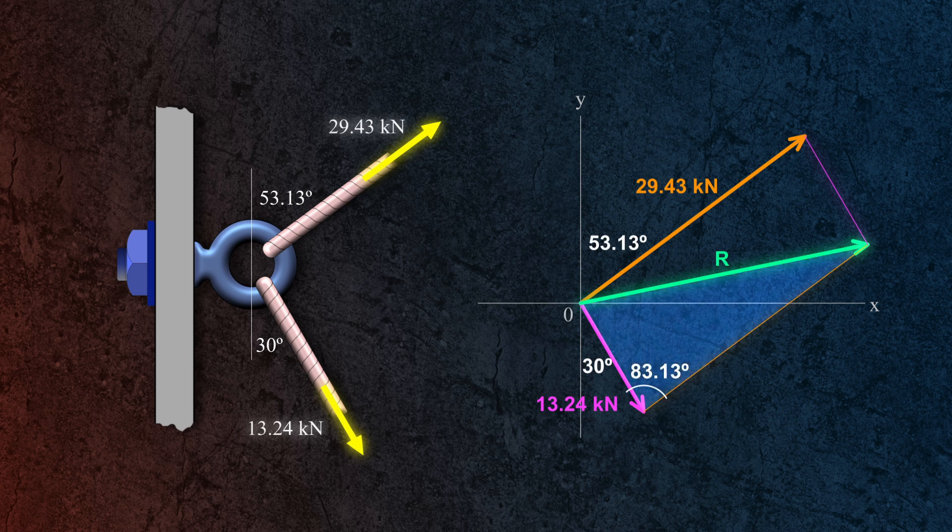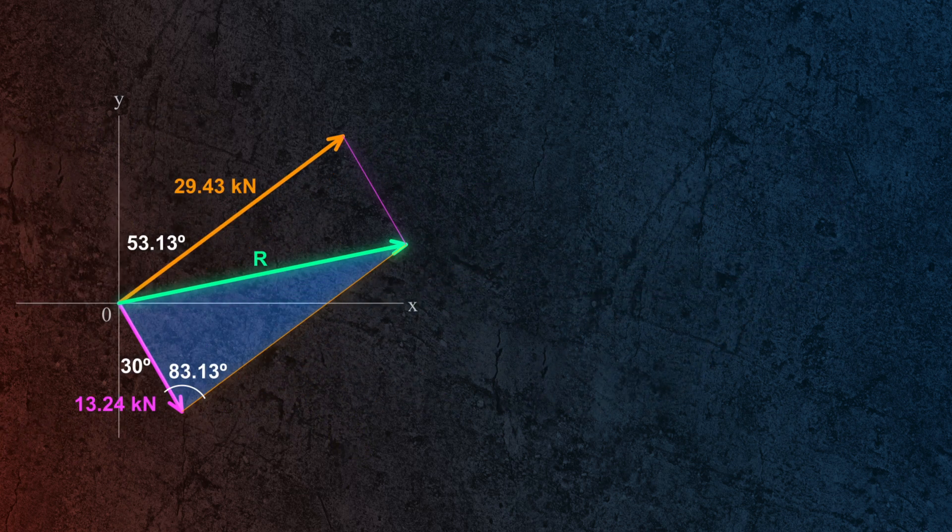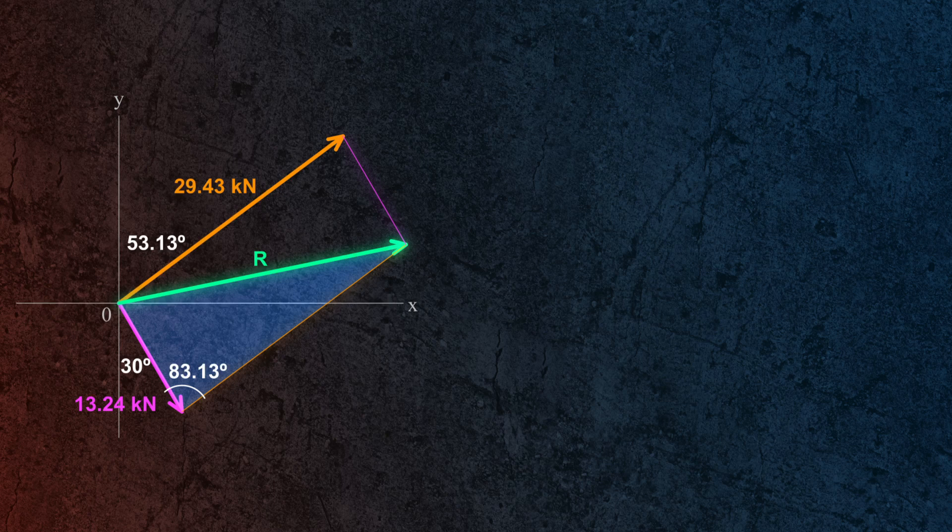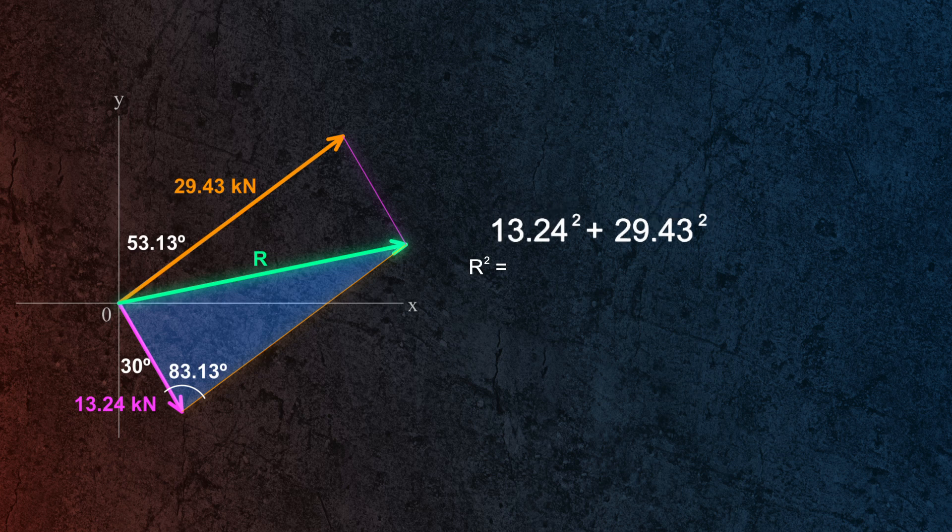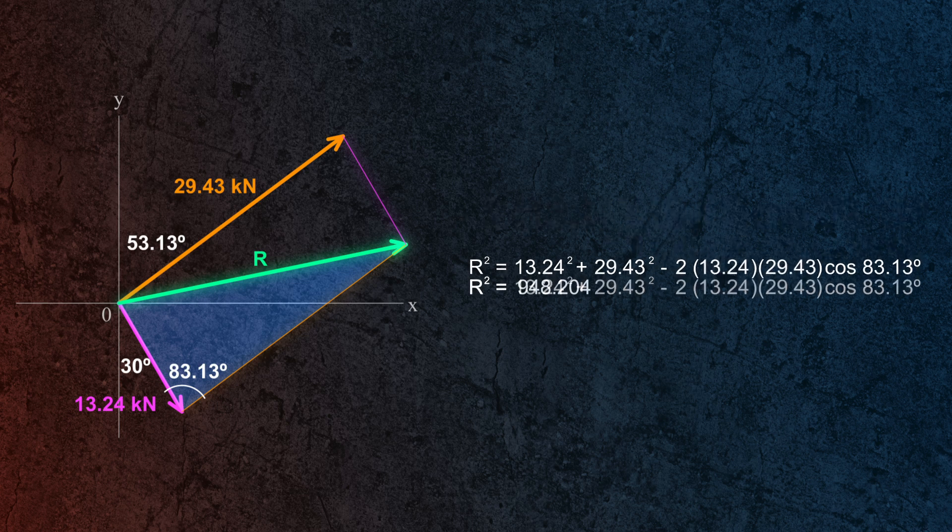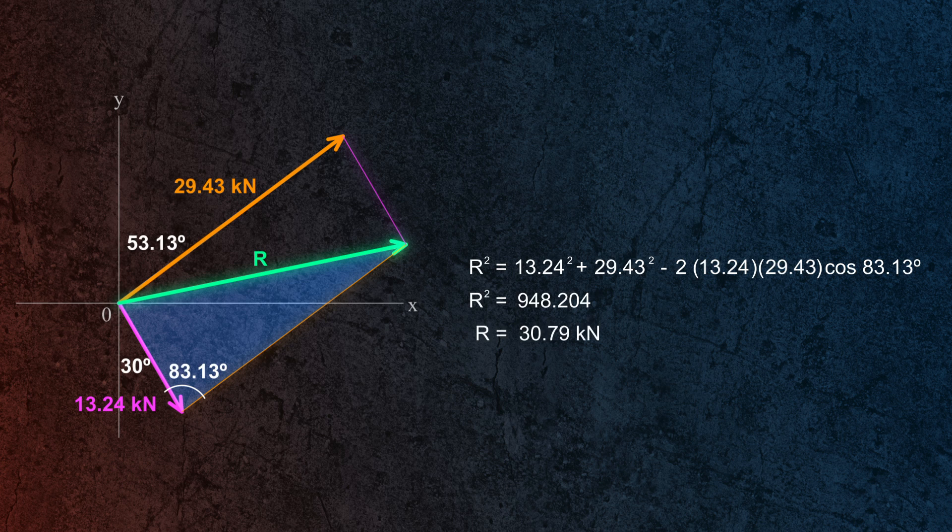Now that we know the magnitudes of the two forces and the angle between them, we can apply the law of cosines to find the magnitude of the resultant force R. So R squared is equal to the sum of the square of the sides, 13.24 squared plus 29.43 squared minus twice the product of the two sides and the cosine of their included angle. And solving for R, we get 30.79 kN.